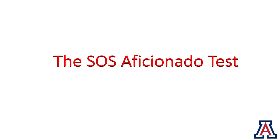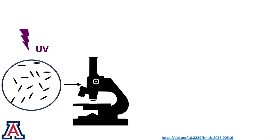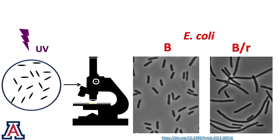So first I'm going to give this SOS aficionado test, because I was told that a number of interesting people would be in the audience. One irradiates a plate of E. coli bacteria with UV light and looks at them under the microscope, and you can either see no filamentation or filamentation.